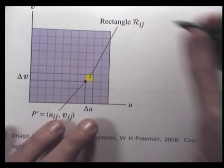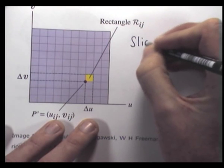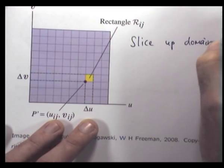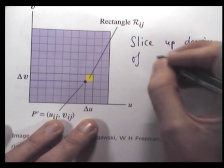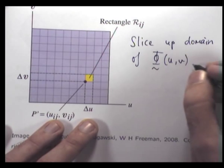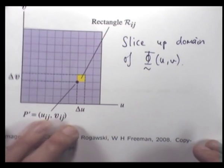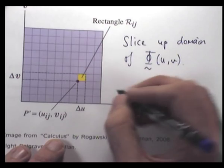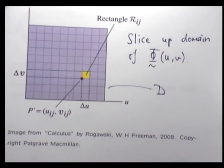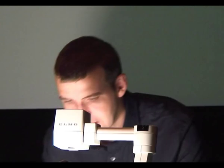How does it work in this case? We slice up the domain of our parametrization. We can make the cuts regular, like the same width.